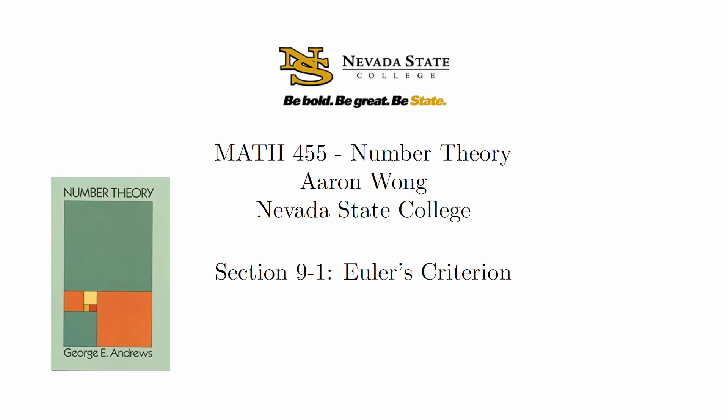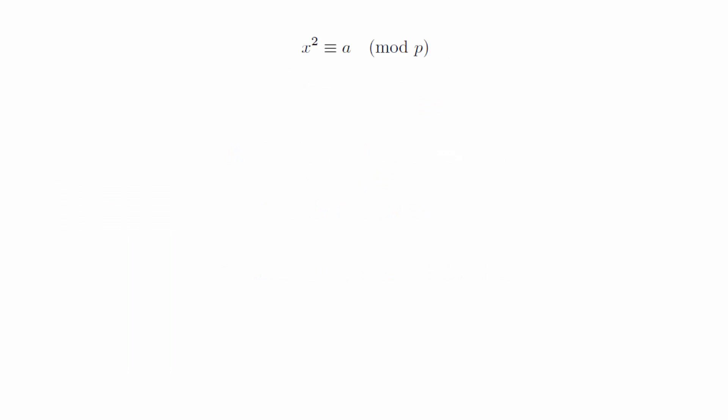We've spent a lot of time this semester studying linear congruences. The most natural next step for us is to look at quadratic congruences. We're going to focus on the simplest possible quadratic congruence: x squared is congruent to a modulo p. Depending on the values of a and p, this will sometimes have a solution and sometimes not. This leads us to a definition.